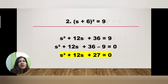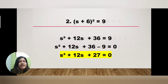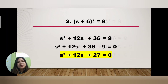Combine like terms: copy s², copy 12s, then combine the constants: 36 − 9 = 27. Therefore, the final answer for example two is s² + 12s + 27 = 0.